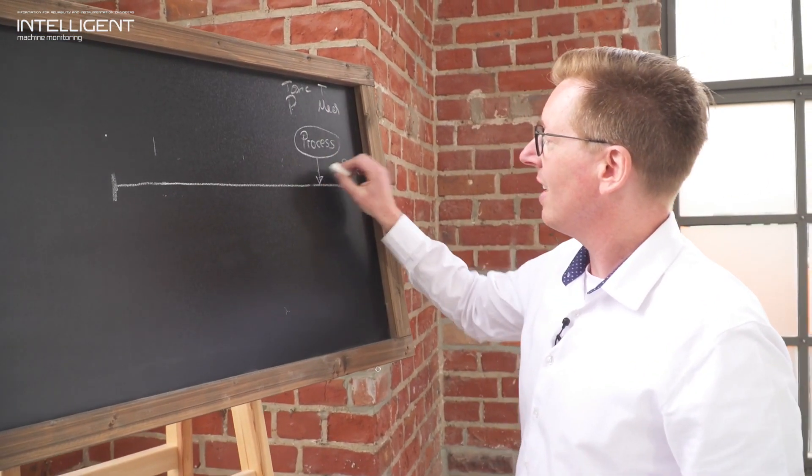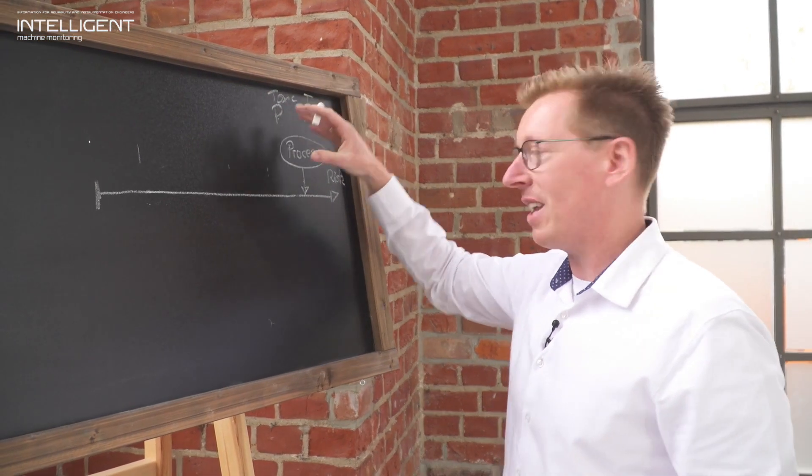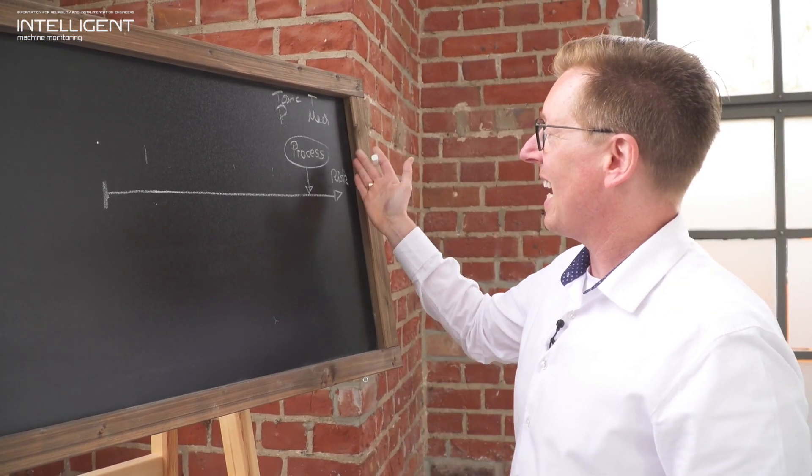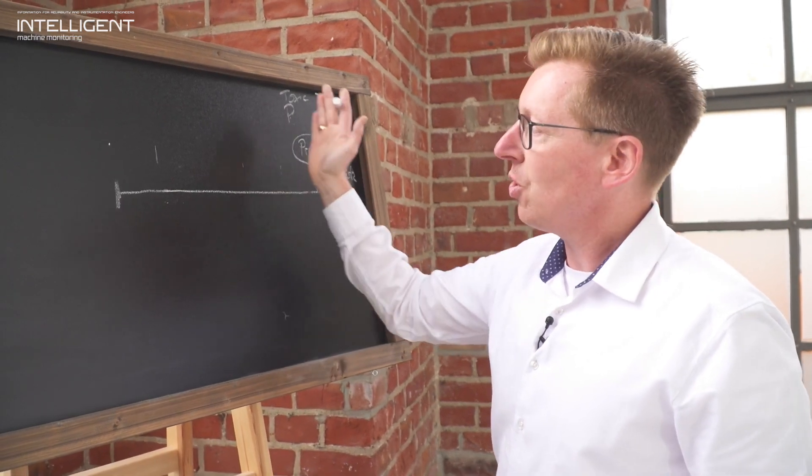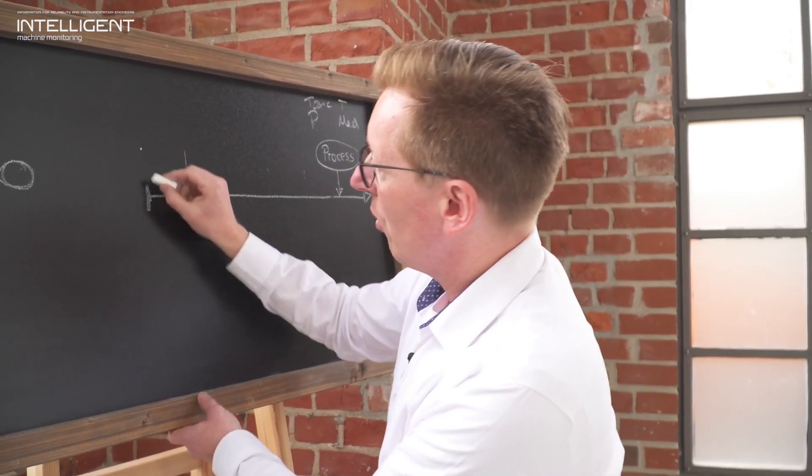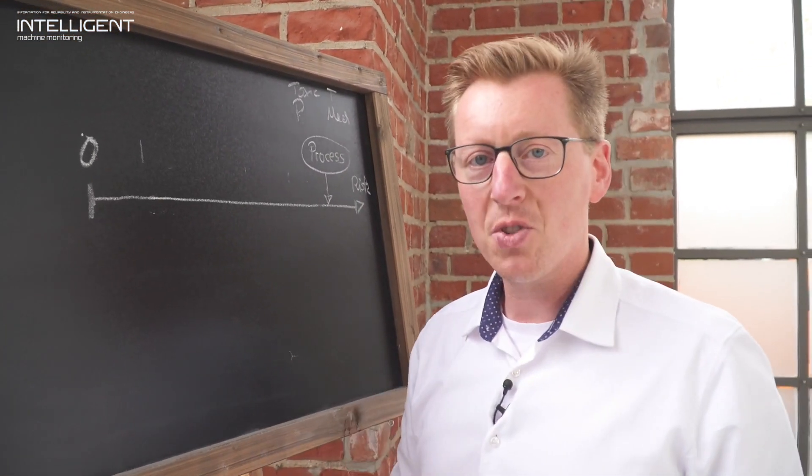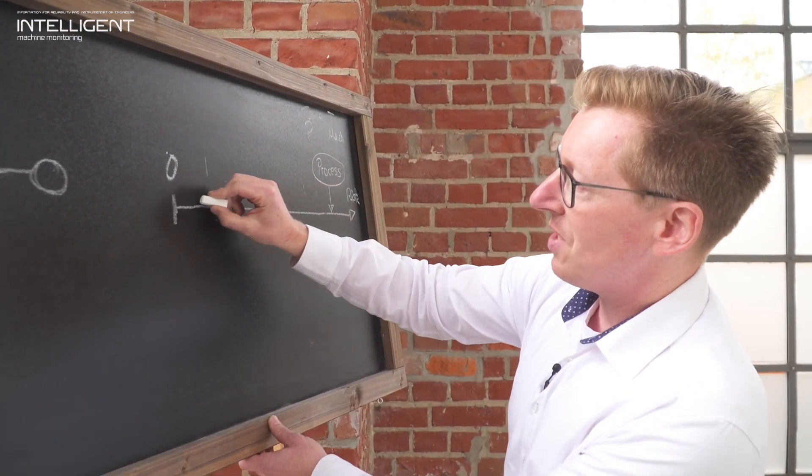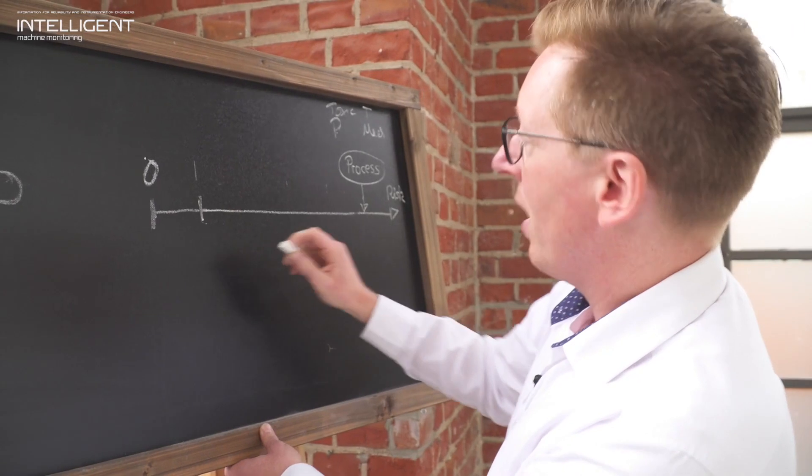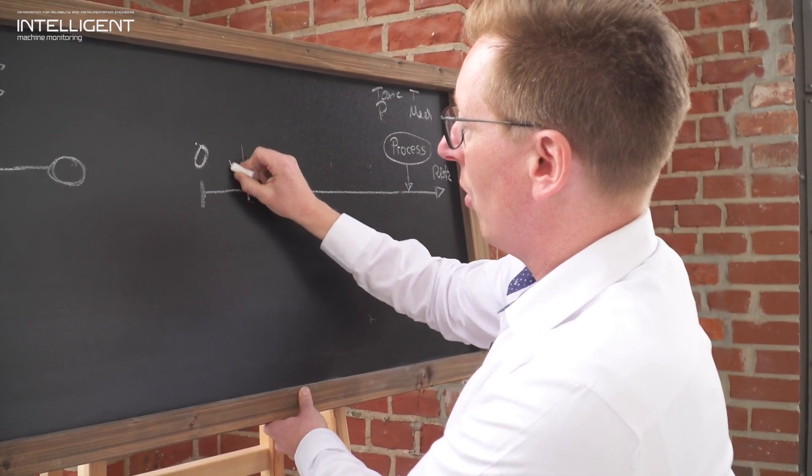This is shown in a so-called risk graph. We have the process risk here. With increasing of these critical factors you have an increase of process risks, and the goal is to reduce the remaining process risk to a tolerable level. You will never make it to zero risk. As soon as you operate any process there is a risk, but you have to bring your current process operation to a tolerable risk.